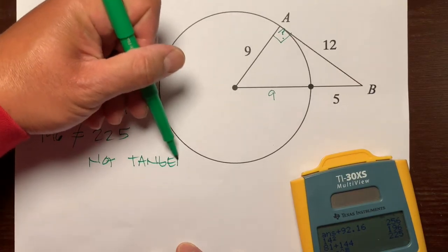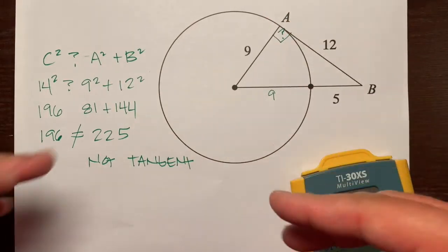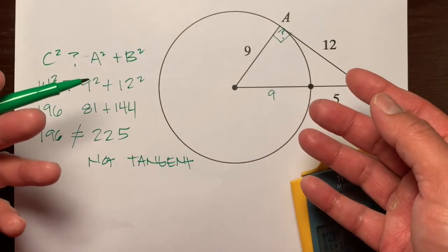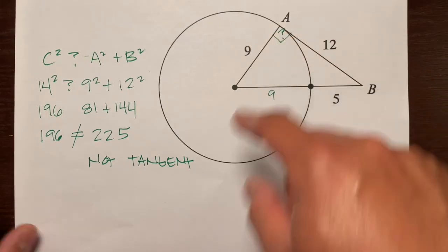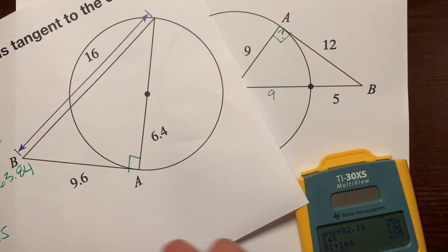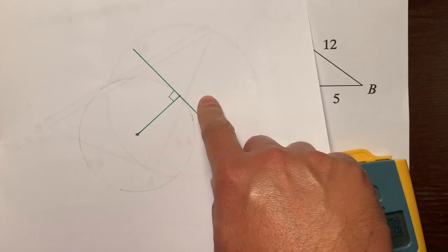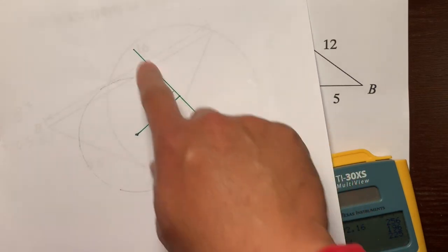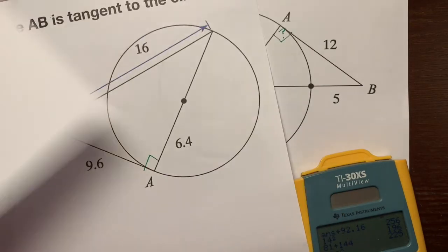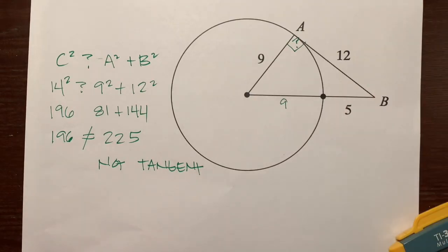So this is how you determine whether a line is tangent to a circle: you use the Pythagorean theorem to determine whether this is a right triangle and this is a right angle, because tangent lines and the radius that intersects at the point of tangency are perpendicular. Hope this helps — have a great day.